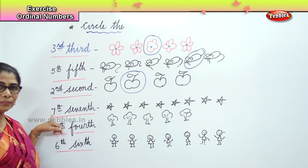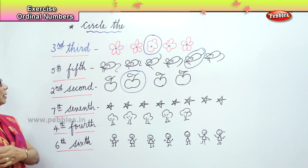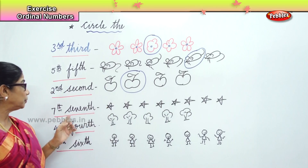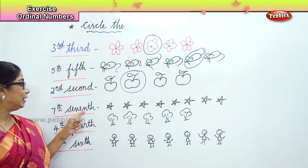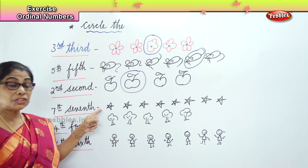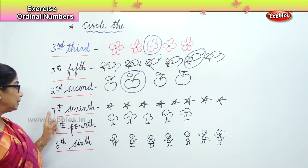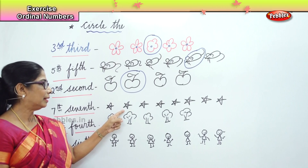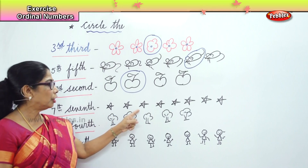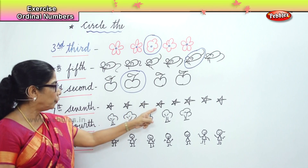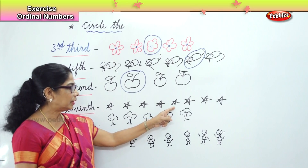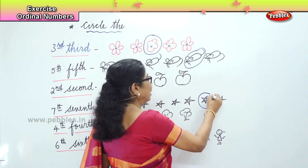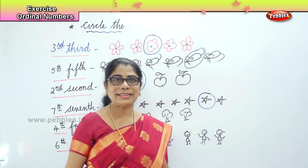Seventh — you're going to circle the seventh star. Seventh spelling: S-E-V-N-T-H. How do you write the short form? Seven and T-H. Count: first, second, third, fourth, fifth, sixth — and this is the seventh star. We circle the seventh star.